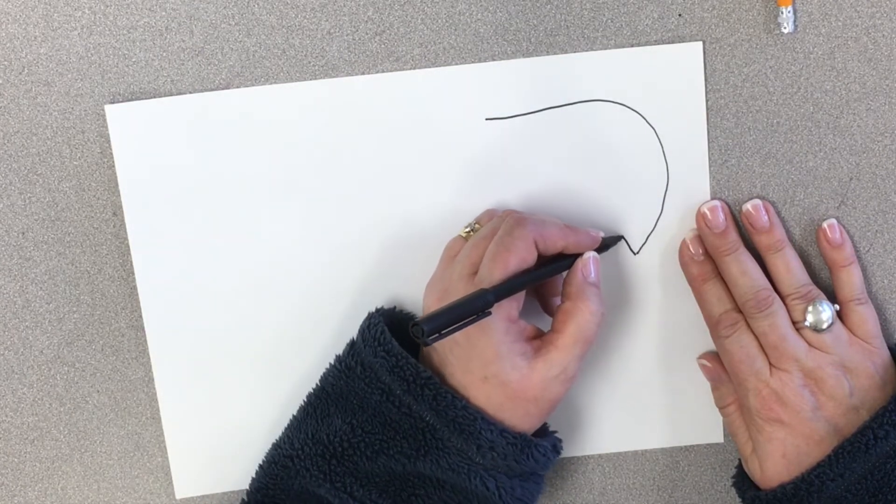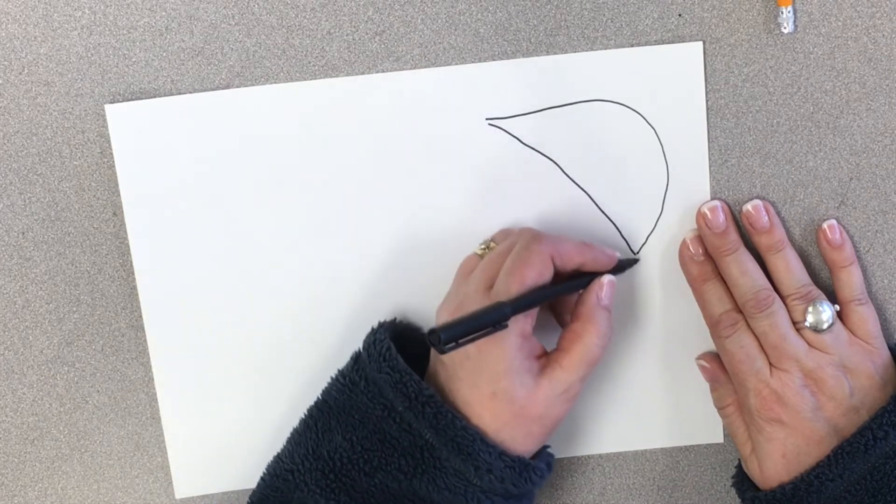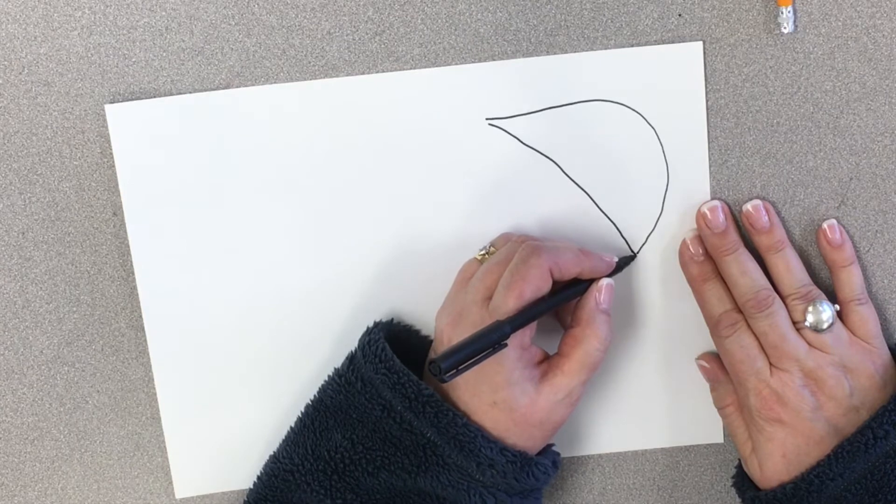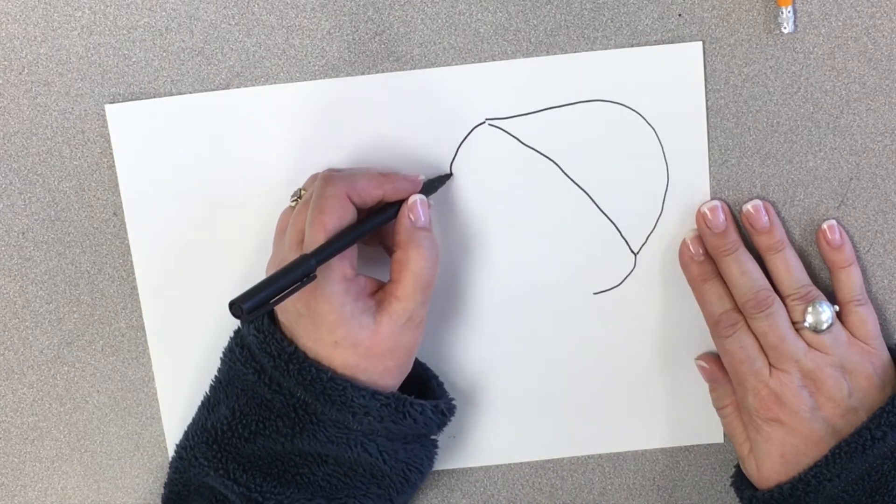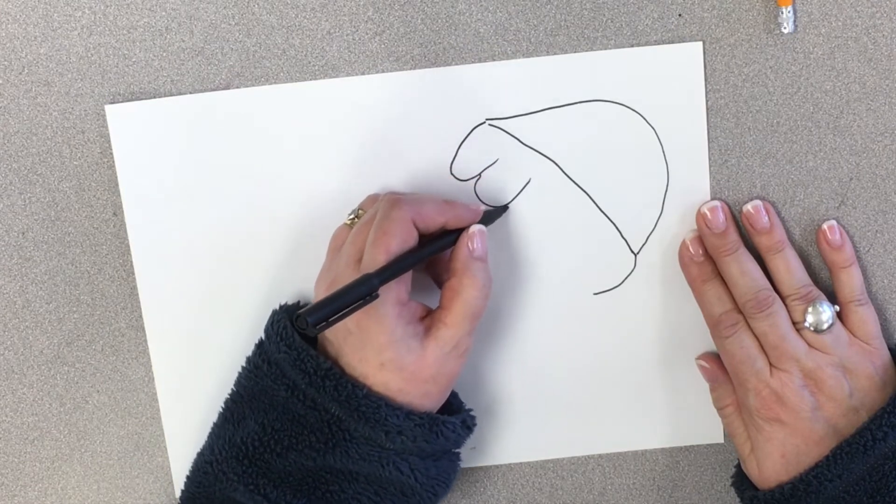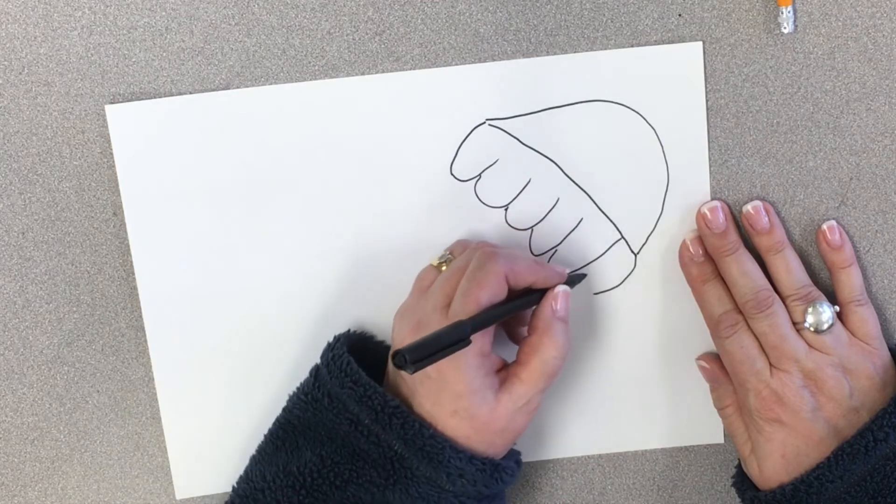Then we're going to draw a line coming back. But it's not going to be straight. It's going to kind of curve a little bit. And we're going to draw a line down. A line down. And it's going to have a bunch of letter U's in it. Like that.